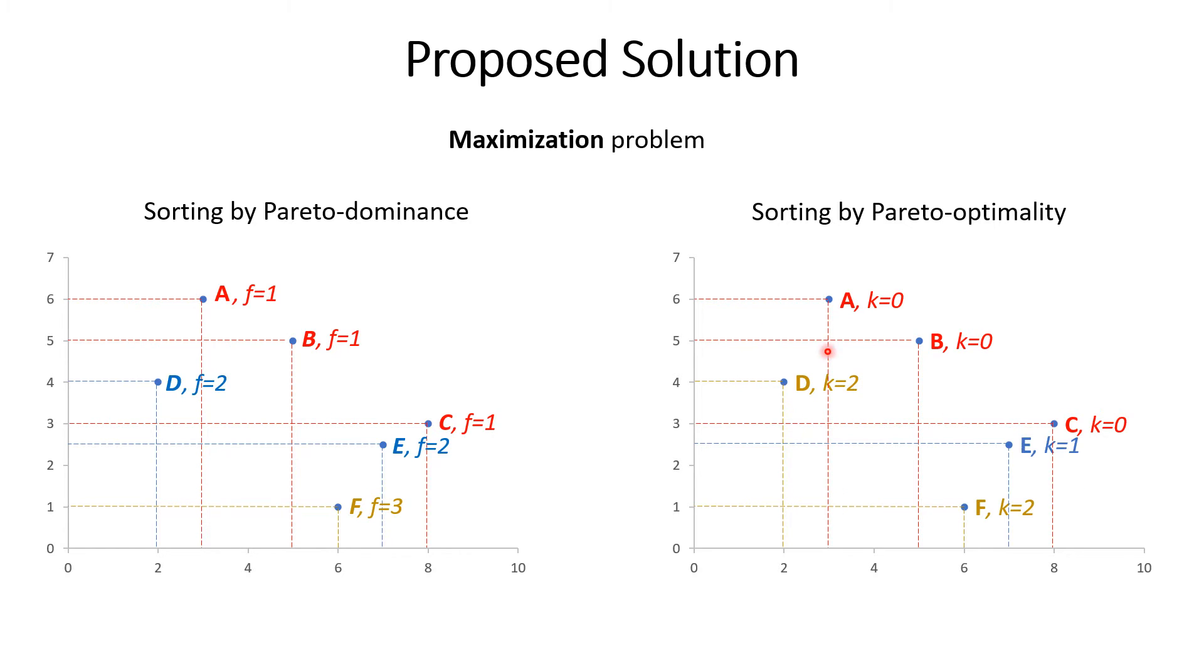Point D is dominated by two points A and B. Point F is also dominated by two points E and C. Their Pareto optimality value is equal to 2 and they are assigned to the third front. The two sorting procedures provide different results. For example, the point D was assigned to the second front for Pareto dominance-based sorting, however in Pareto optimality-based sorting it moved to the third front.